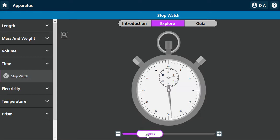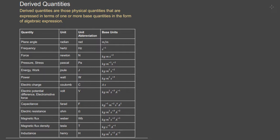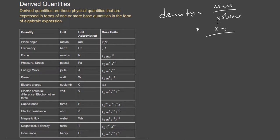Derived quantities are those expressed in terms of base quantities. A simple example is density. Density is mass divided by volume. The unit of mass is kilogram, and the unit of volume is meter cubed (length × length × length). So the unit for density is kilogram per meter cubed, which is kilogram times meter raised to the power of minus 3.